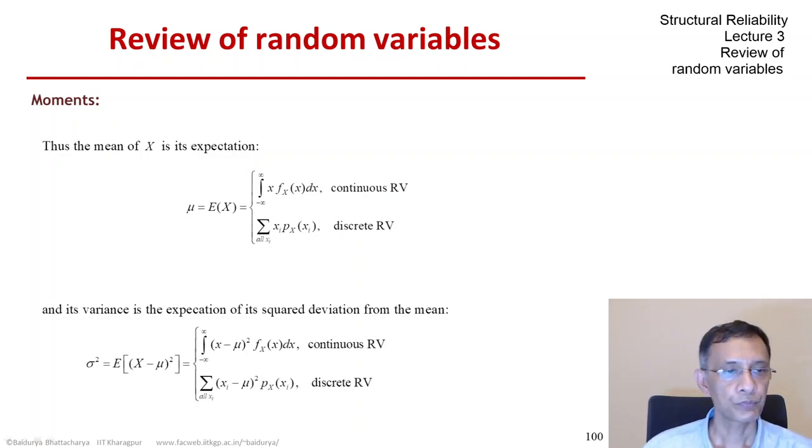So the first moment about zero, the first raw moment of the random variable x is the mean itself. The second moment about the mean, so when g is x minus mean whole squared, we have the well-known variance of the random variable.